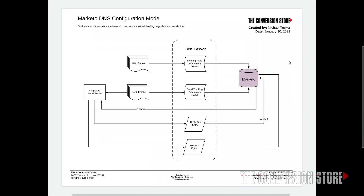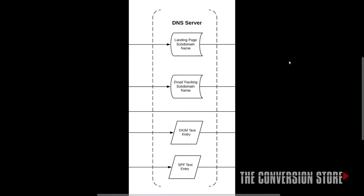Let's flip to a quick diagram to explain what's happening here. This diagram shows how Marketo interacts with a domain name. The column in the center is the DNS server — this is where your domain name lives. In this case, conversionstore.com sits in this DNS server. Think of it like a card catalog from the old library days: one server across the entire world wide web that says, 'If you're looking for anything on conversionstore.com, go to this DNS server and it will tell you all the records you need.'